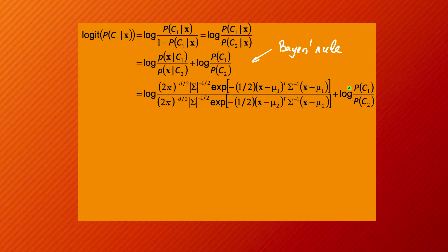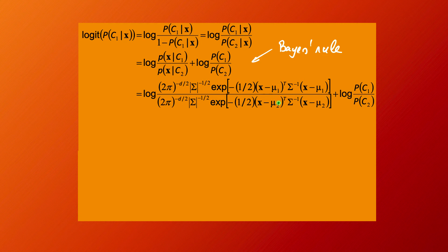We then apply the logarithm, splitting it across the terms. The normalization constants cancel out, and we apply the log to the exponential terms. Both are quadratic functions in x, but the quadratic term is exactly the same in both, so when we apply the logarithm to the exponentials the quadratic terms simply cancel out, and we are left with a linear function in x.